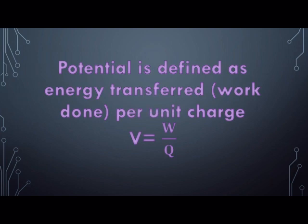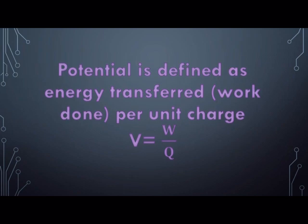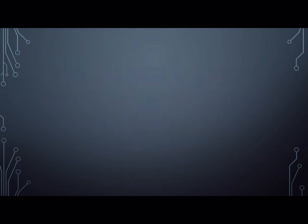Potential is defined as energy transfer or work done per unit of charge. The unit for electric potential is joules per coulomb. It's given the name volts with symbol capital V.